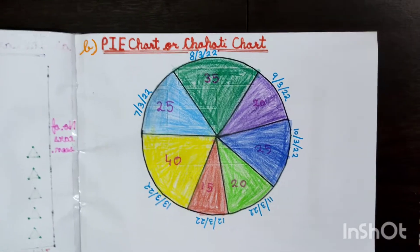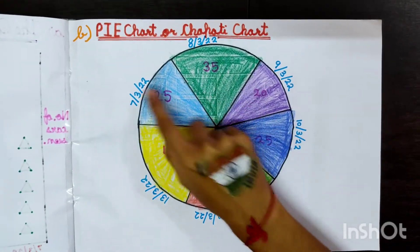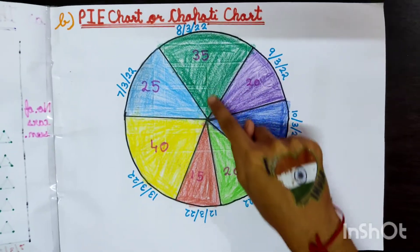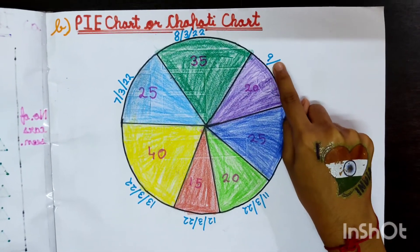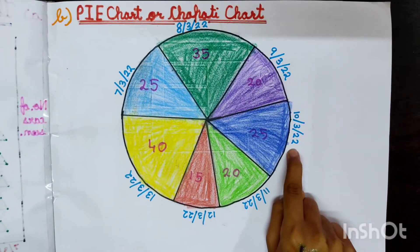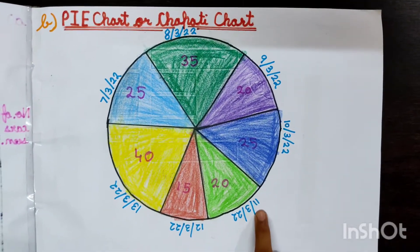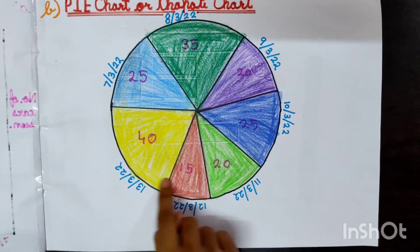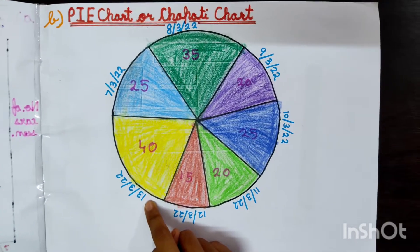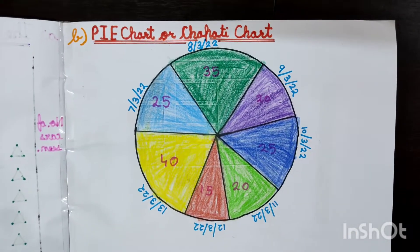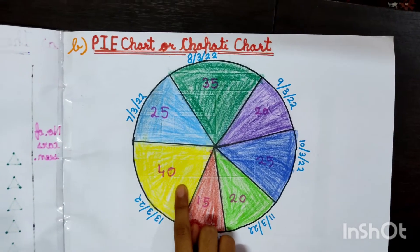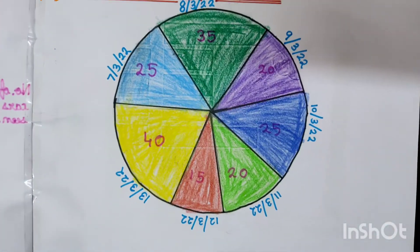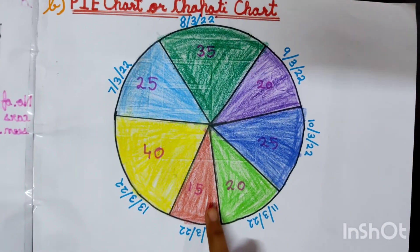My second Smart Chart is the Pie Chart or Chapati Chart. 7 March: 25 cars. 8 March: 35 cars. 9 March: 20 cars. 10 March: 25 cars. 11 March: 20 cars. 12 March: 15 cars. 13 March: 40 cars. The largest portion shown in yellow represents 13 March 2022 with 40 cars, and the least cars are shown in red, meaning 12 March 2022 with 15 cars.